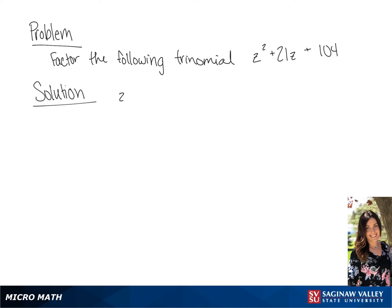We want to factor z squared plus 21z plus 104. We're going to start by separating this into two binomials and put z as the first term on each one. Now we want to find the factors of 104 that add up to equal 21.